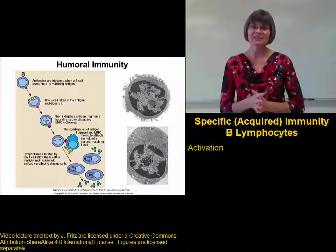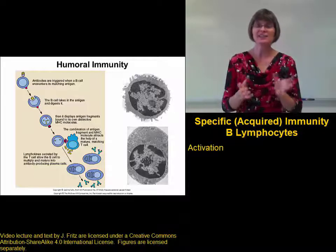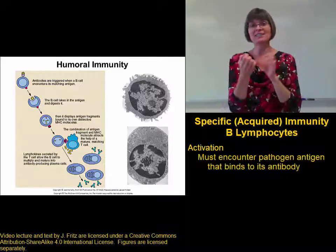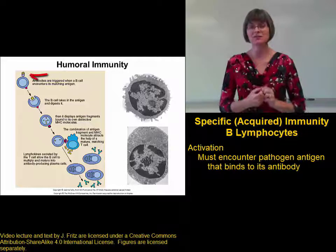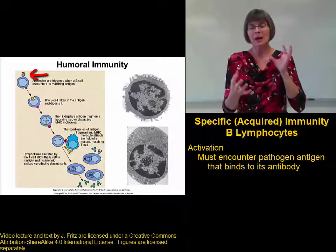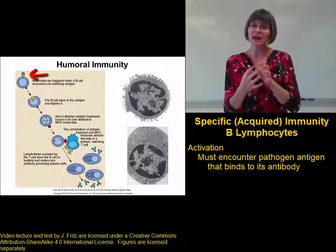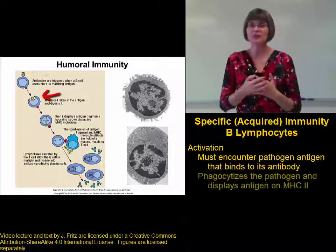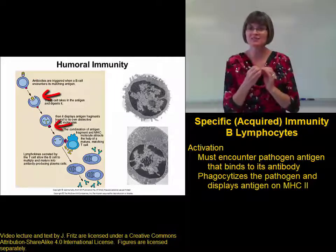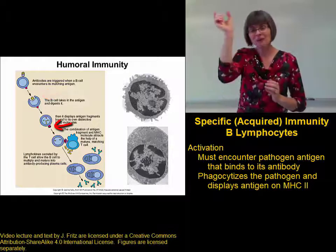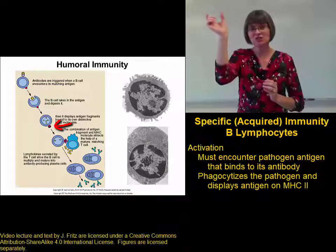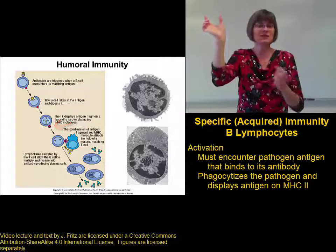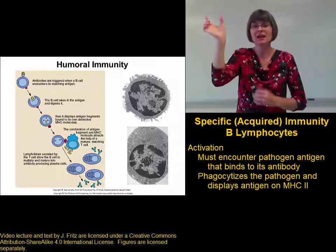In order to be activated, the B cells wait until they bump into the pathogen that has the antigens that their antibodies bind to. When the B cell binds to the pathogen, it engulfs or phagocytizes the pathogen, breaks it down into little pieces, and displays the pathogen antigens on its surface. We talked about this before — B lymphocytes can be antigen presenting cells.